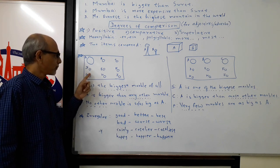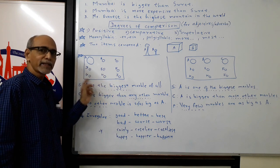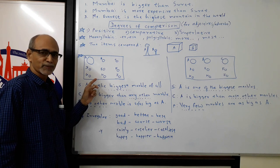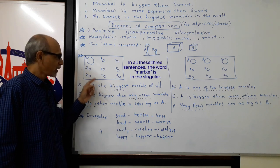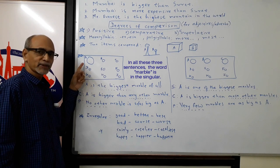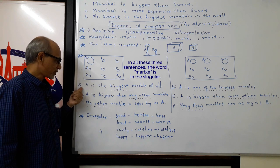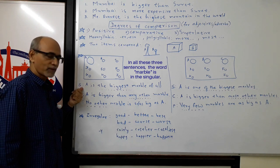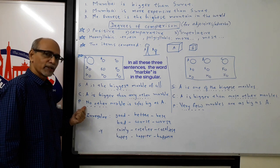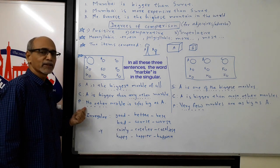Suppose I say A is bigger than any other marble. That also conveys the same message. And I can also say no other marble is as big as A. Here, three sentences: A is the biggest marble, A is bigger than any other marble, and no other marble is as big as A. All three sentences convey the same message.